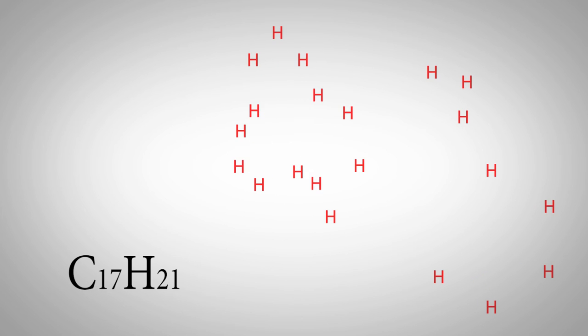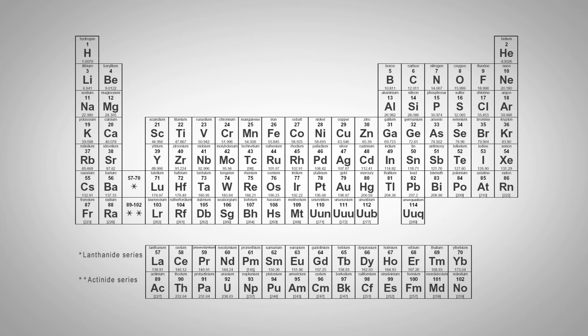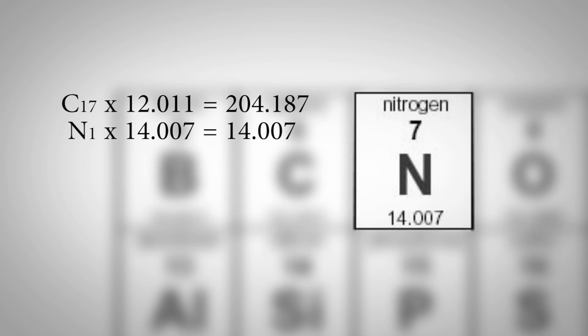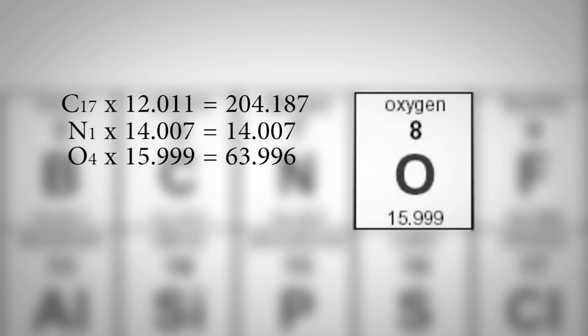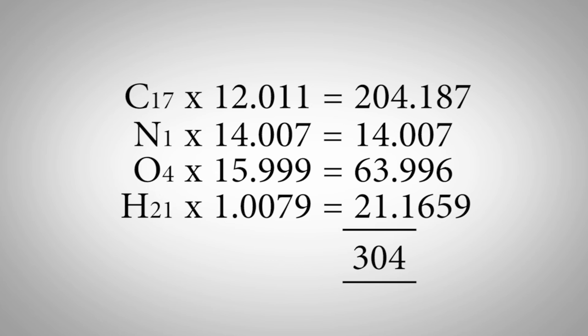It has 17 carbon atoms, 21 of hydrogen, a single nitrogen, and 4 oxygen atoms. We can work out its mass directly from the periodic table. Carbon has an atomic mass of 12.011 D, nitrogen 14.007, oxygen 15.999, and hydrogen 1.0079, all adding up to a total of around 304, and that's the number we have to look out for.